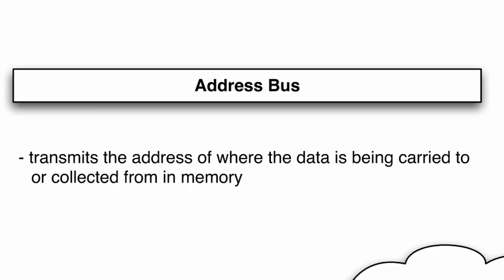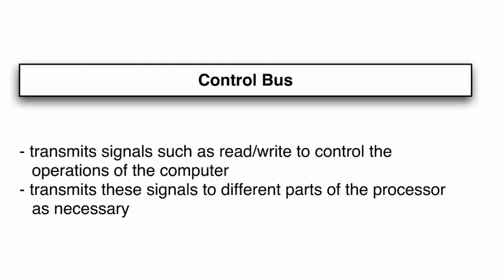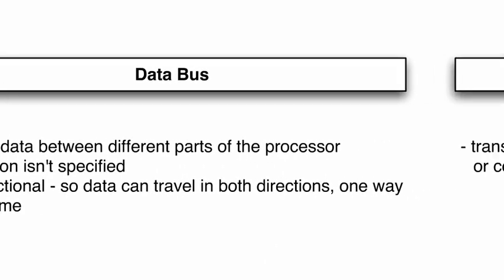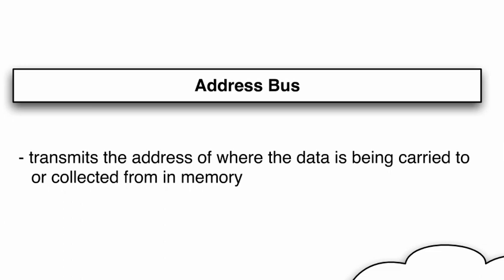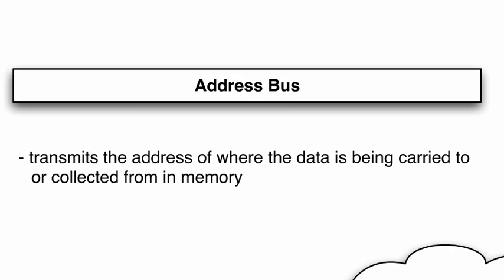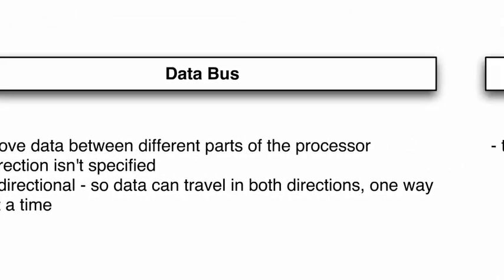The address bus transmits the address of where the data is being carried to or collected from in memory. The control bus transmits signals such as read/write to control the operations of the computer, and transmits these signals to different parts of the processor as necessary. Just be clear on those three buses — they are the three buses you need to know.